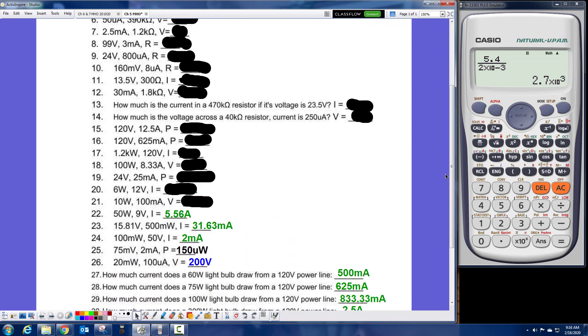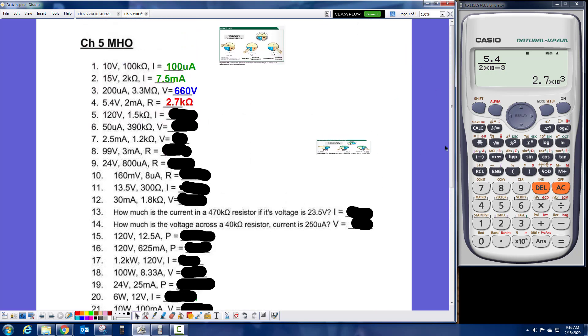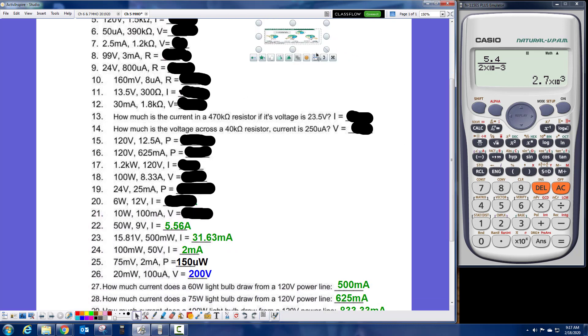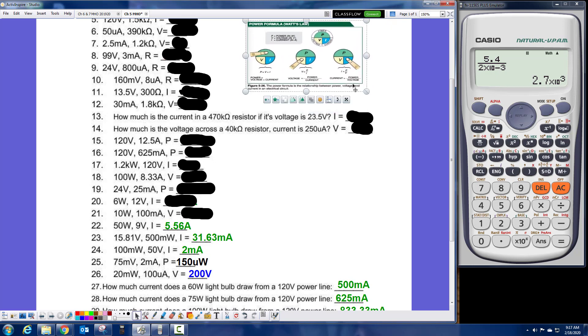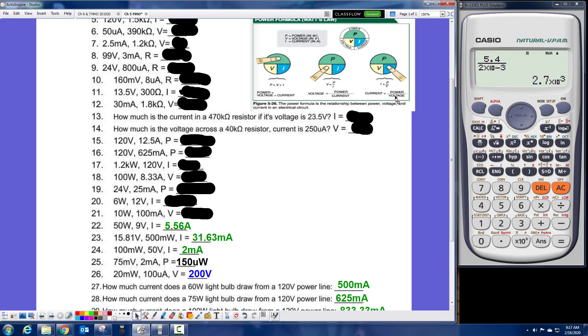Alright, so let's skip on down here to number 15. And you see here that we're looking for power. So we're going to use our power formula. And it basically works the same way as the Ohm's law. Alright, so since we're looking for power, we cover up the P and it's equal to V times I. So what is my V? 120 volts times my I of 12.5 amps, which equals 1.5. And I'm looking for power. So it is kilowatts.